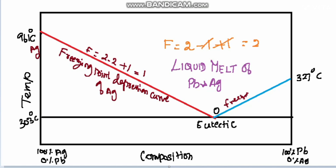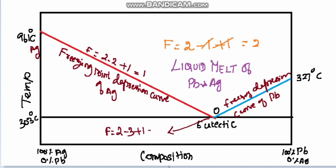At the eutectic point, three phases exist: solid silver, solid lead, and their liquid melt — all three are in equilibrium. The number of phases is 3, so F = 2 − 3 + 1 = 0. The system is non-variant at the eutectic point.